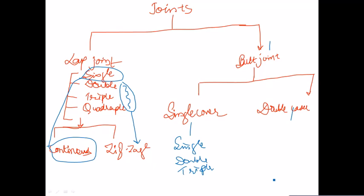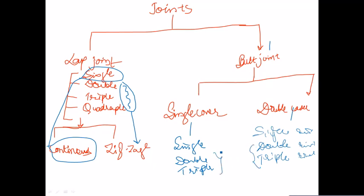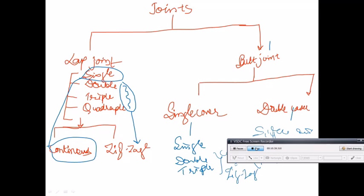In butt joints, you may get single riveted, double riveted, and triple riveted configurations. Similarly, in double cover butt joints you may get single riveted, double riveted, and triple riveted. In both cases, the placement of rivets can be continuous or zigzag.